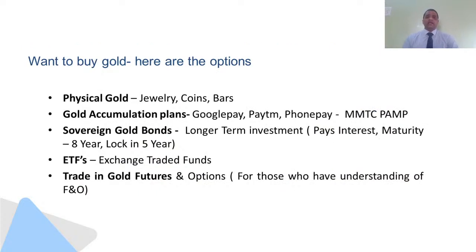If you are in India and you really want to have gold as a part of your portfolio, there are three to four options available to you as an investor. The one and the easiest way of buying gold is to purchase physical gold via any jewelry shop. Jewelry is one of the best ways to buy gold, followed by coins and bars as explained in the previous slide.